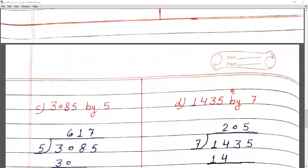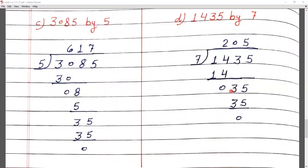Question C: 3085 by 5, meaning 3085 divided by 5. Since 3 is smaller than 5, we make a pair: 30. 5 sixes are 30. 30 minus 30 is 0. Bring down 8. 5 ones are 5, 8 minus 5 is 3. Bring down next digit 5, making 35. 5 sevens are 35. 35 minus 35 is 0. The answer is 617.